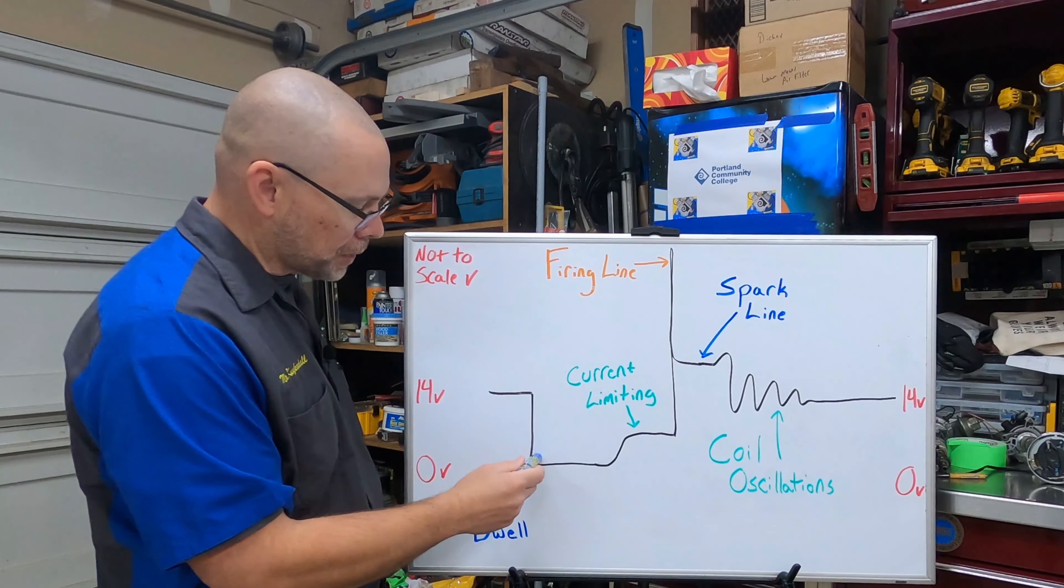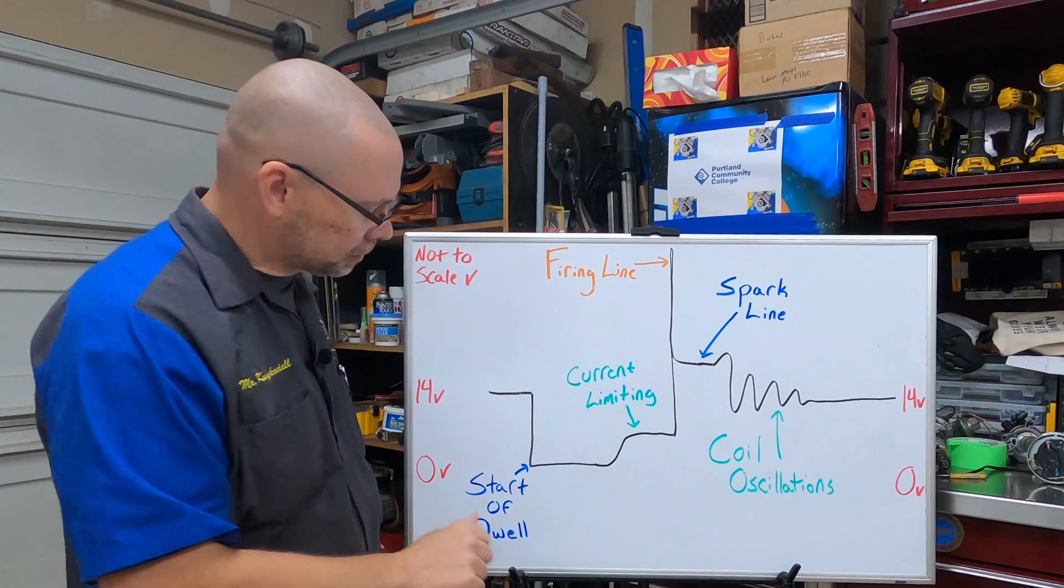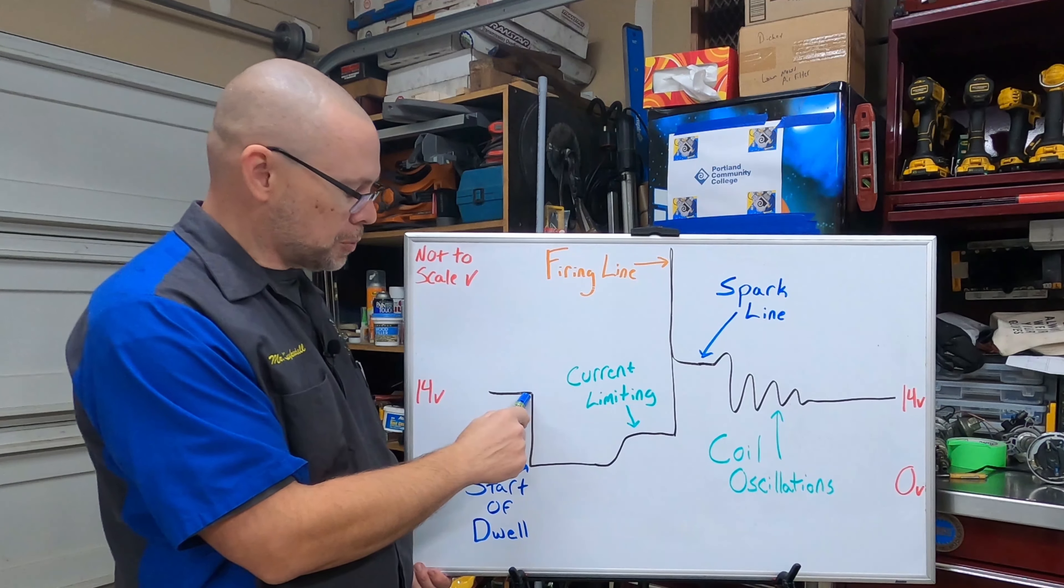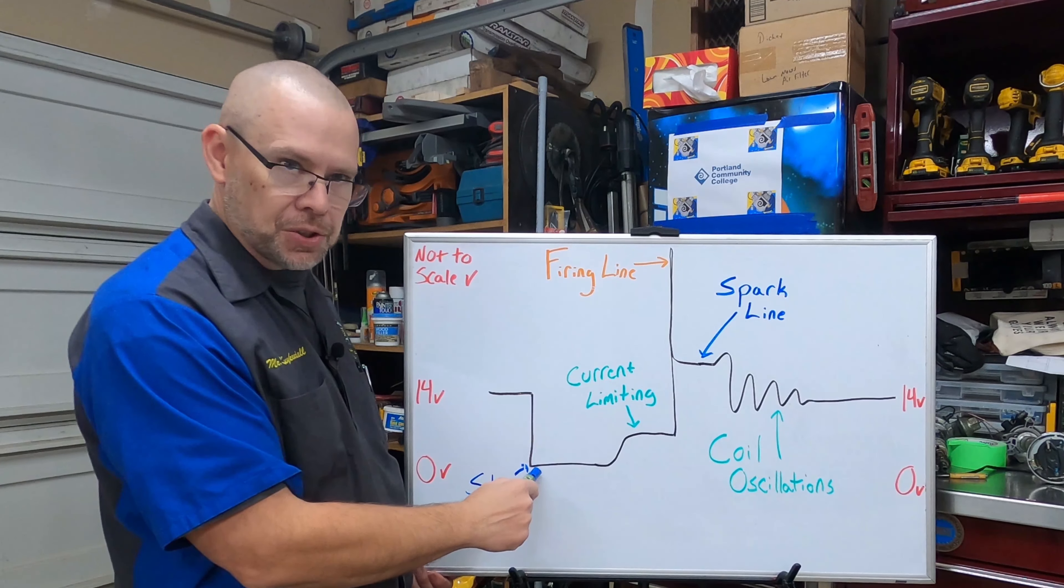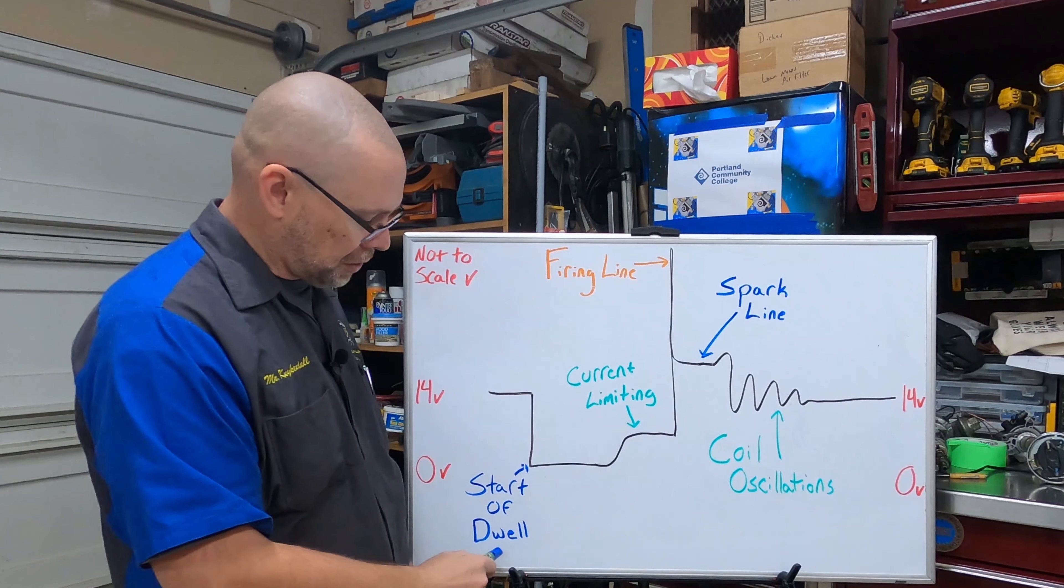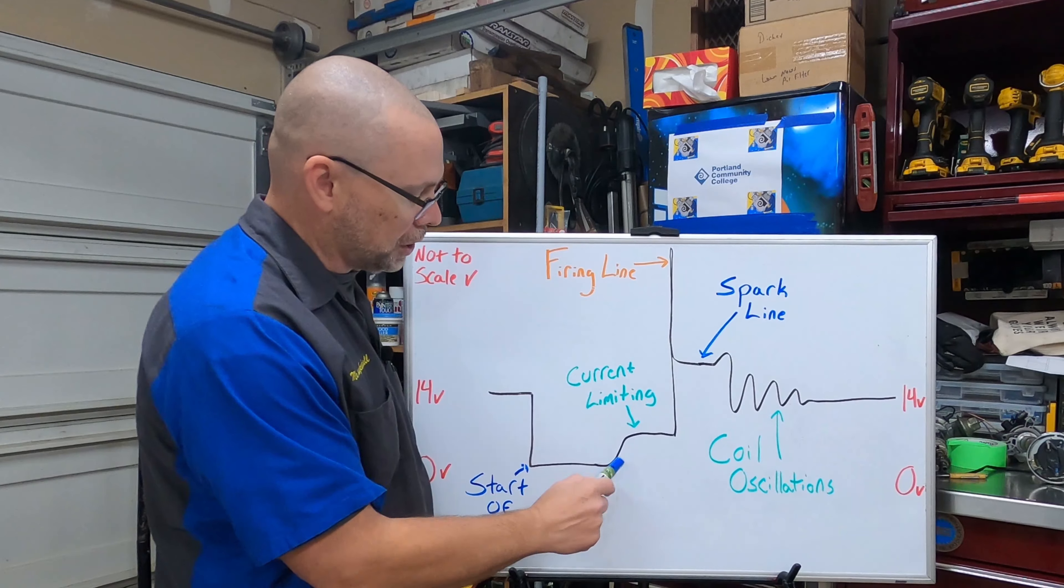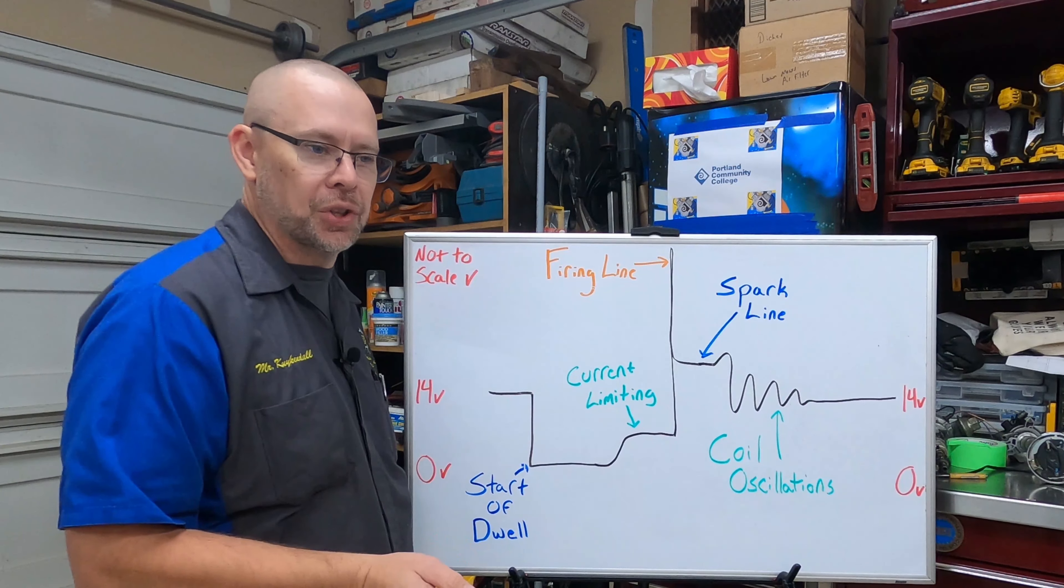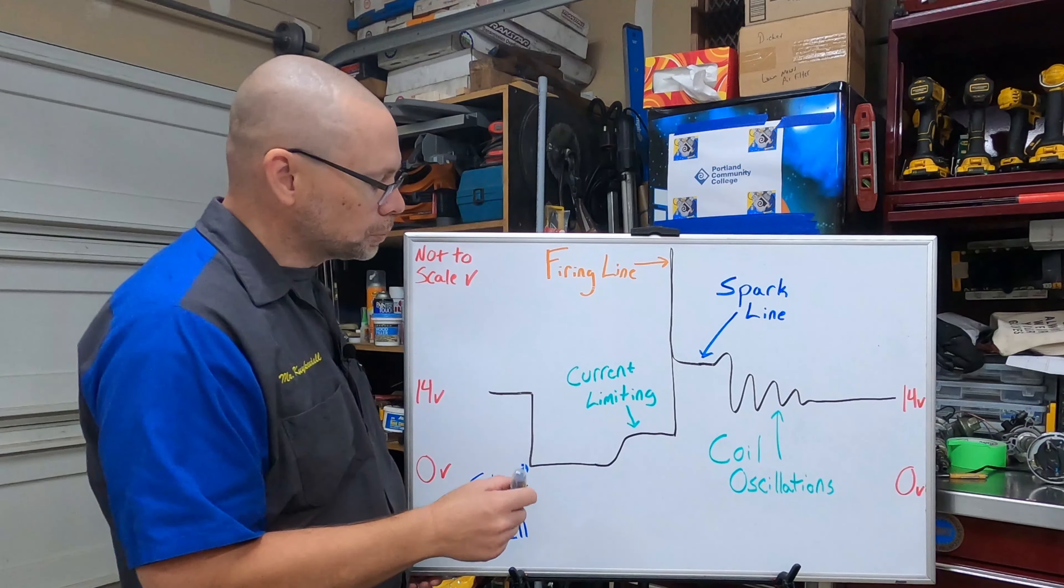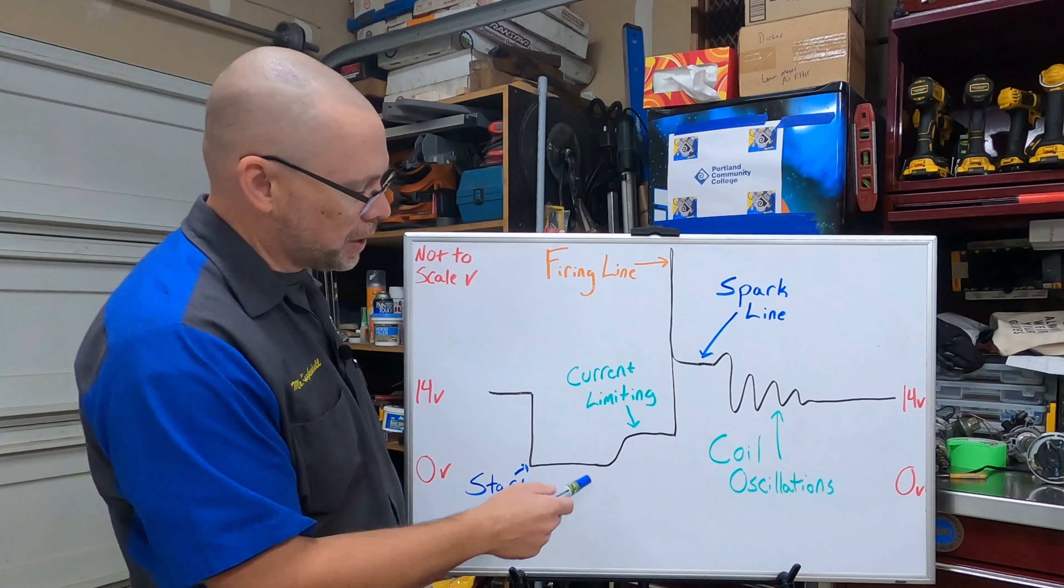Which means we have power there until we close that switch, no matter what it is. Then that power should drop to near zero. So we have power in, we close the switch because we're on the ground side, we see it drop to pretty close to zero. It holds zero, we call that the start of dwell. It holds near zero coming along, coming along. Now there's two different coil designs, we have a current limiting style and a saturated style.